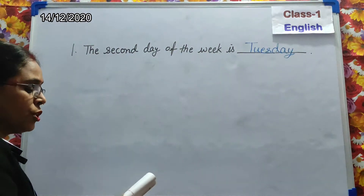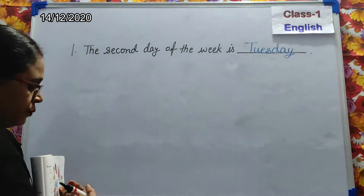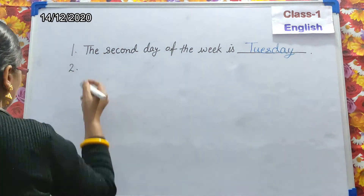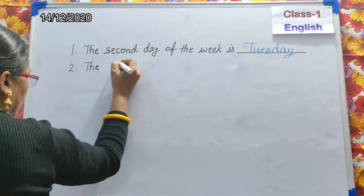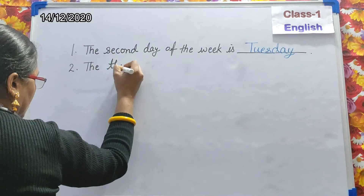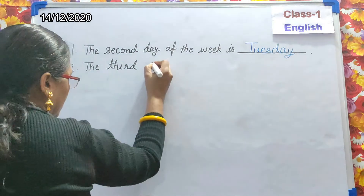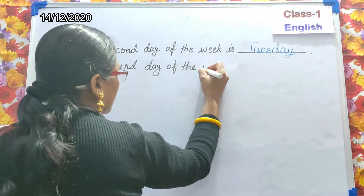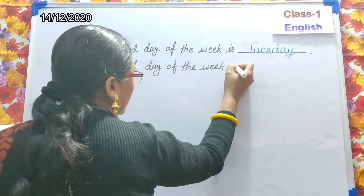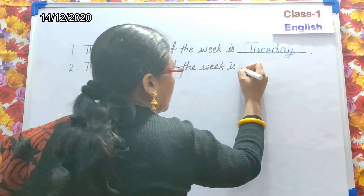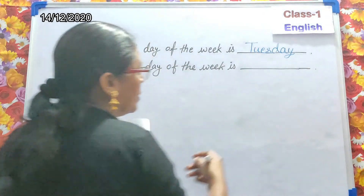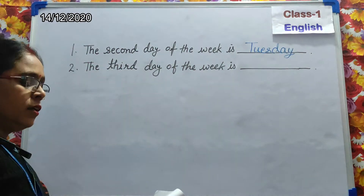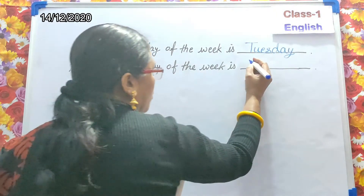Question number two: what is the third day of the week? First is Monday, second is Tuesday, and third is Wednesday. What is the first day of the week? The first day is Monday — M-O-N-D-A-Y, Monday.